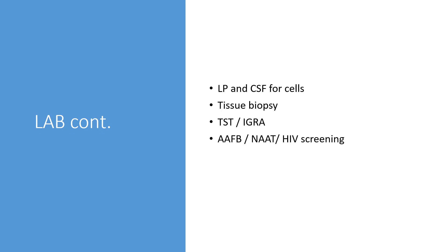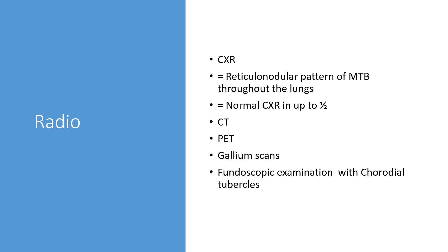For further diagnosis, you can do a lumbar puncture and have the CSF assayed for cells. Tissue biopsy, tuberculin skin tests, or interferon-gamma release assay can be done. You can also test for alcohol acid-fast bacilli, nucleic acid amplification tests, and HIV screening. Radiologically, a chest X-ray may show a nodular miliary pattern throughout the lungs, though it might be normal in up to half of patients. CT will give a clearer picture, and PET scans and gallium scans can be done. Fundoscopy is necessary due to the possibility of choroidal tuberculosis.